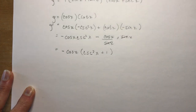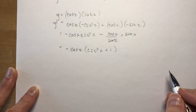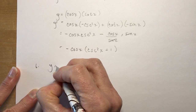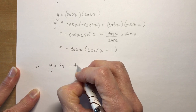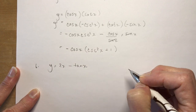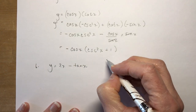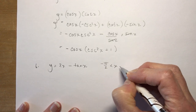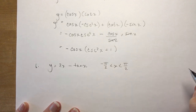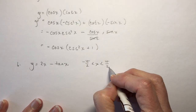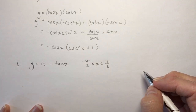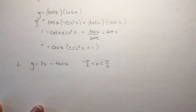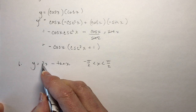One more example from the homework: number six asks you to find the local maximum of y equals 2x minus tan x, given the domain restriction that x is between negative π/2 and π/2. For trig functions it's necessary to restrict the domain since these functions continue indefinitely.